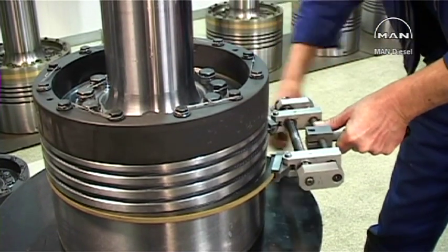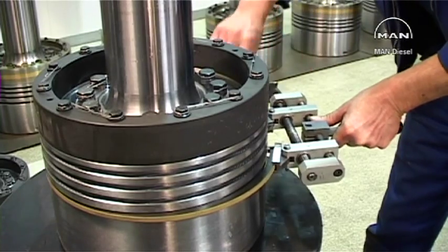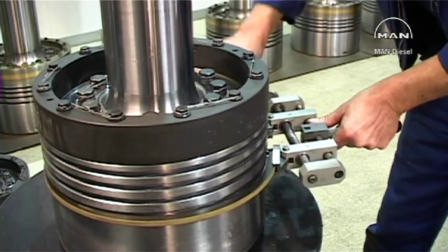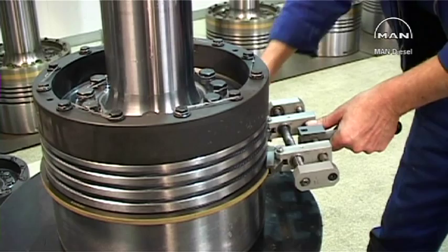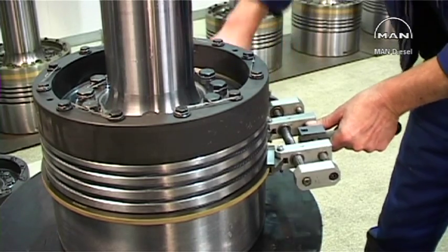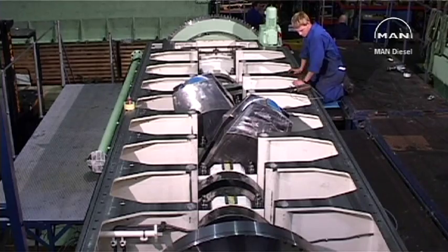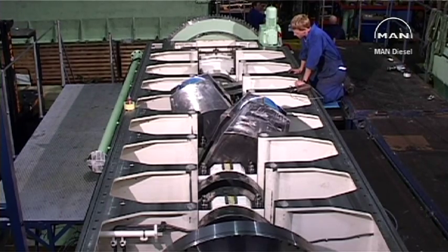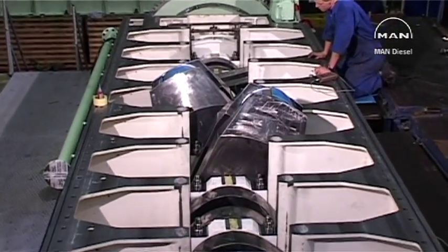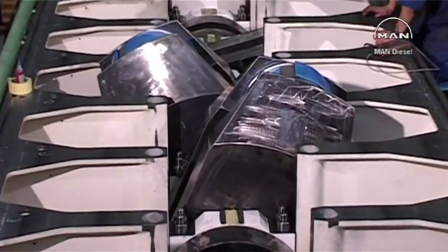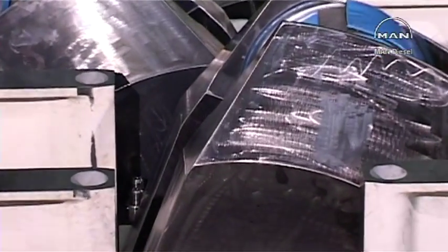The rings are fitted by means of a special tool, which evenly distributes a bending moment to the rings, thus preventing the danger of a permanent deformation. On some engines, the crankshaft is so big that to facilitate manufacture and installation, it's made in two halves.